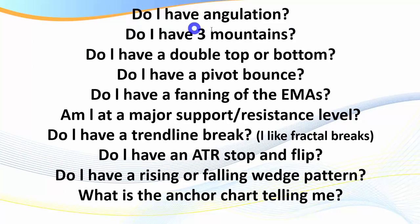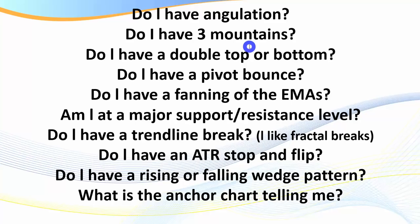Let's go through some key considerations of trading divergence. First: do I have angulation? This is one of the key ingredients for a successful counter-trend trade — the greater the angulation, the better the trade. Second: do I have three mountains? In a trend, one wave, two, three — the more waves you've had in a trend, the more likely you are to have a correction or a change in trend. After three hills or three waves, you're more likely heading towards a successful counter-trend trade.